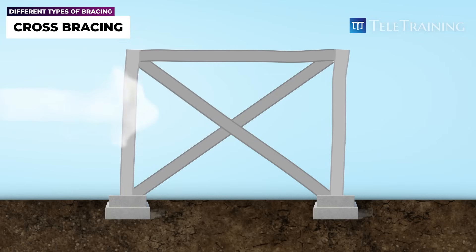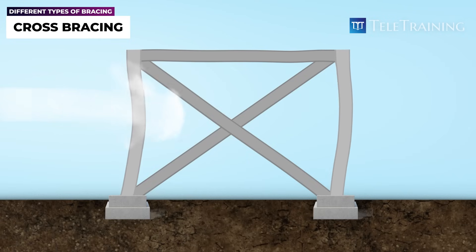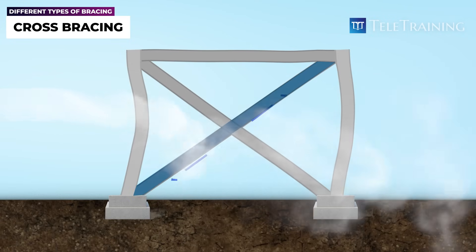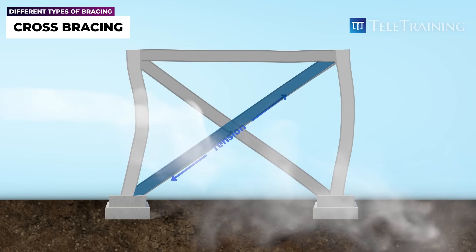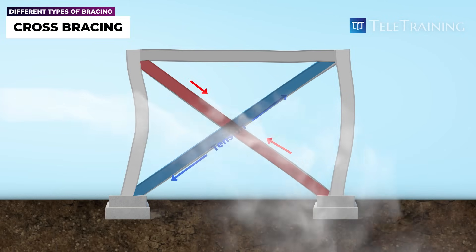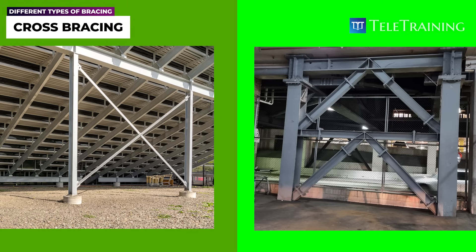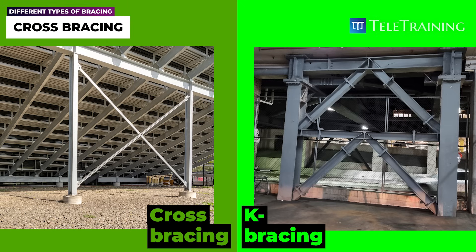If wind blows against this building from the left, the building will deflect to the right. As this happens, this member will be pulled in tension, while this one will be pushed and put into compression. One thing to note about cross-bracing is that the members used are usually lightweight, as only the member in tension actually provides resistance. This is because thin members have poor compressive capacity.